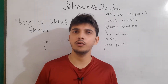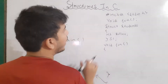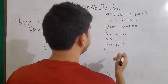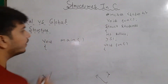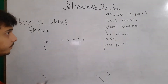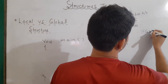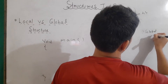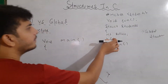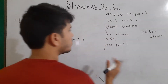First, let's talk about local versus global structures. I have made a function and the declaration of our structure is above the definition of our functions — above the fun and above the main. In this case, this is a global structure. It means that the global variables and the structure will be available for all the functions.